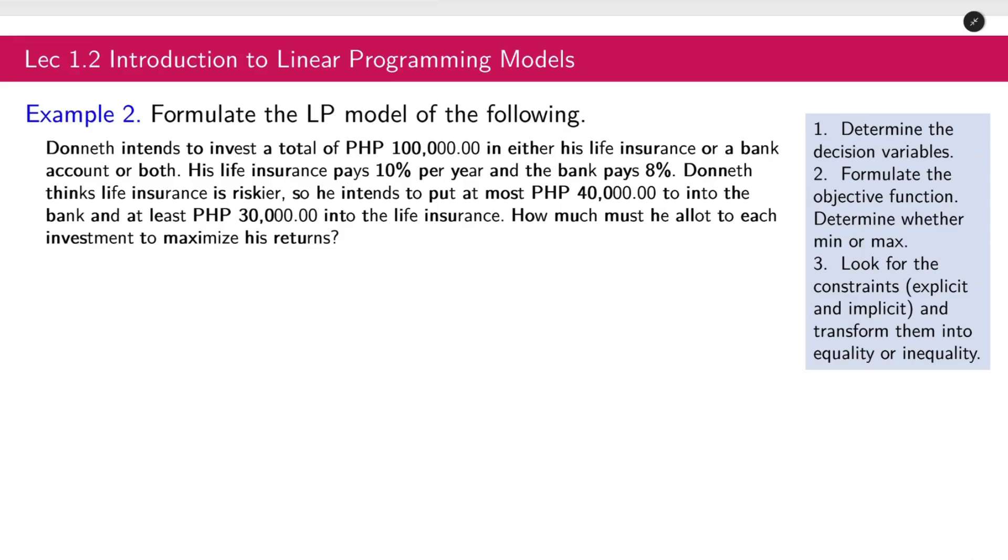Second example. Donet intends to invest a total of 100,000 in either his life insurance or a bank account or both. His life insurance pays 10% per year and the bank pays 8%. Donet thinks life insurance is riskier. So he intends to put at most 40,000 into the bank and at least 30,000 into the life insurance. How much must he allot to each investment to maximize his returns? Let's highlight the last sentence which is the question.